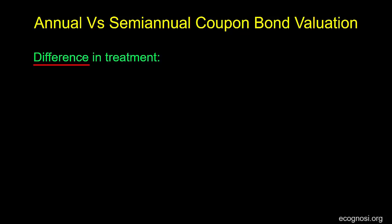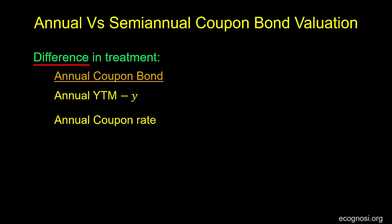So by convention, in bond markets, we are given the annual yield to maturity — we denoted this with Y — and the annual coupon rate. These two are fine to use when dealing with an annual coupon bond. Even if we were to divide by the periodicity, the two values would remain unchanged, as that would be dividing by 1.